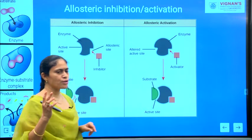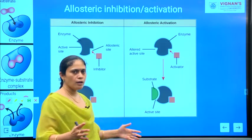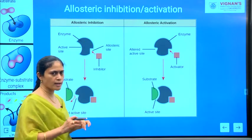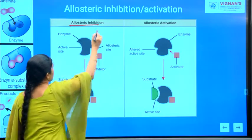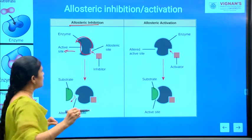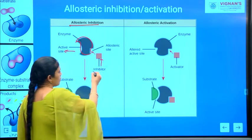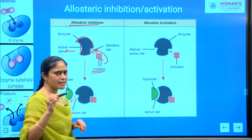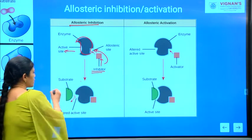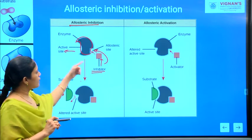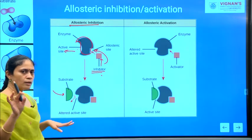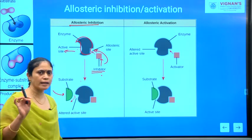Considering allosteric effectors, there are positive and negative allosteric effectors — allosteric inhibitors as well as allosteric activators. In the case of allosteric inhibitors, consider the enzyme with its active site. Once the inhibitor binds to the allosteric site of the enzyme, there will be alterations in the active site, and the substrate can no longer bind to the active site. This is the allosteric inhibition process.